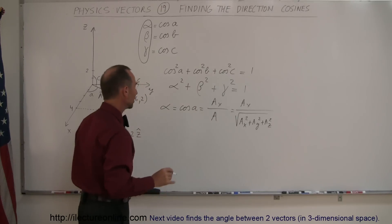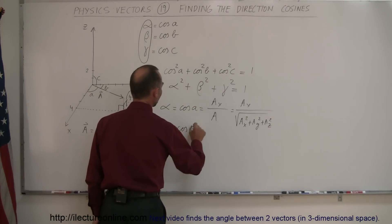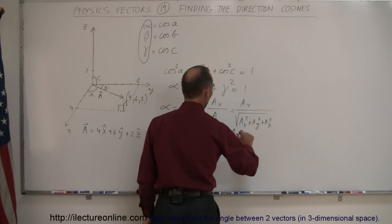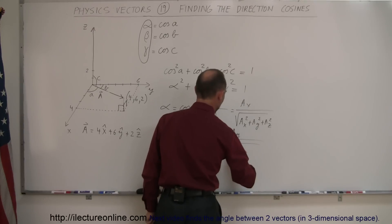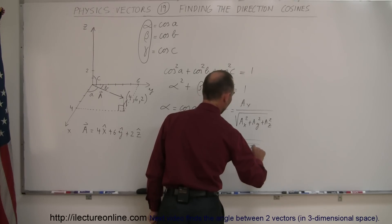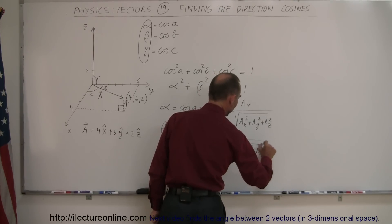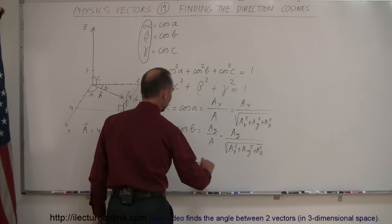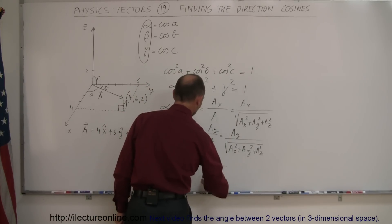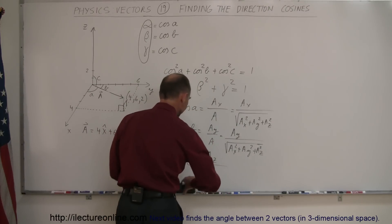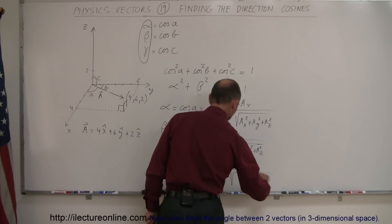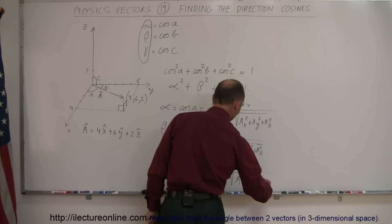Of course, we can do the same for the other direction cosines. Beta is equal to the cosine of B, which equals A_y over A, which equals A_y over the square root of A_x squared plus A_y squared plus A_z squared — which is the magnitude of vector A. And then finally, gamma is equal to the cosine of C, which equals A_z divided by the magnitude of A, which can be written as A_z divided by the square root of A_x squared plus A_y squared plus A_z squared.